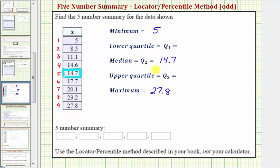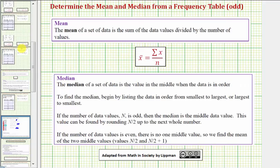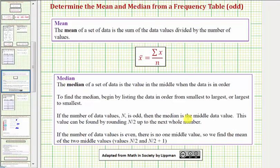There's also a formula that we can use to locate the position of the median. To locate the position of the median, if the number of data values n is odd, then the median is the middle data value. The position of this value is found by rounding n divided by 2 up to the next whole number.